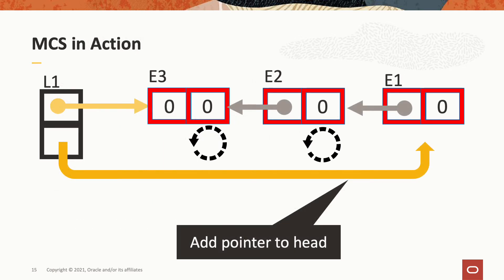Illustrating that idea, we add another field to L1 — the pointer to the head — which points all the way to E1. So the lock now contains two pointers: a pointer to the tail, where threads append themselves, and a pointer to the head, which is the owner. And obviously, when a new thread takes control and takes ownership, it needs to update the head pointer.